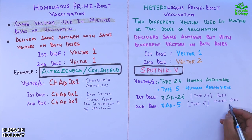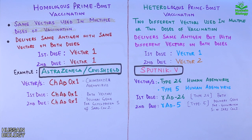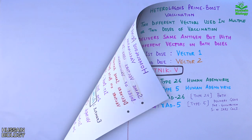Both doses deliver the gene for glycoprotein S of SARS-CoV-2. So far, we've seen the usage of same vectors in homologous prime-boost and different vectors in heterologous prime-boost for delivering the same antigen. Now let's see the differences within our body when we encounter these vectors and how our immune system responds.